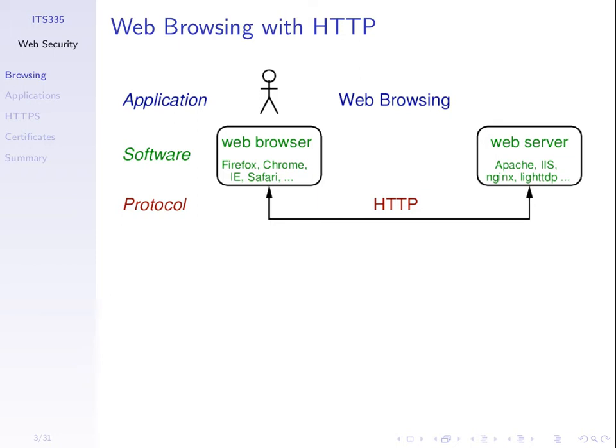The user of the web browser clicks on a link or types in a URL in the address bar, and that triggers the browser to communicate with the web server. The normal case is to request a web page which someone has already put on the web server. When that request comes to the web server, it responds with that web page and it's seen on our browser. There are different web browsers and different web server applications.